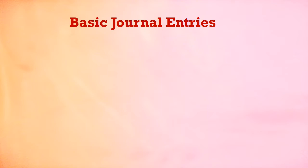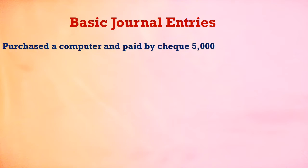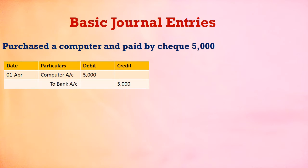I am going to explain one by one all the entries. The first entry: purchased a computer and paid by check. When we pay by cash, we pay directly — that's how we call cash. If you pay by check, you are paying through the bank. So the entry is: Computer account debited, Bank account credited.